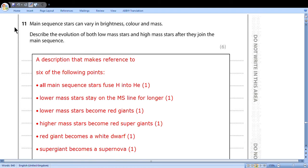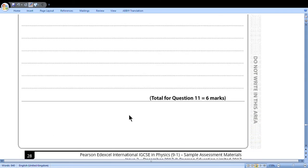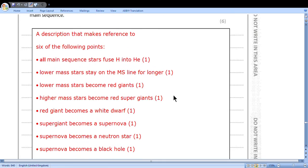Main sequence stars can vary in brightness, color and mass. Describe the evolution of both low mass stars and high mass stars after they join the main sequence. So in your answer, you should mention that all main sequence stars fuse hydrogen into helium. Lower mass stars stay on the main sequence line for longer. Lower mass stars become red giants. Higher mass stars become red supergiants. Red giants become white dwarfs. Supergiants become supernovae. And then supernovae become either neutron stars or black holes. So write down all ideas that you know because it is six points.